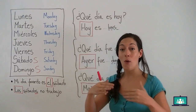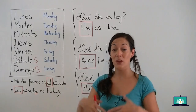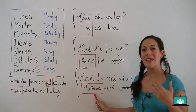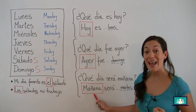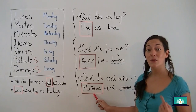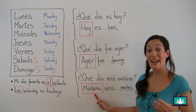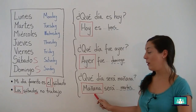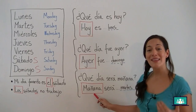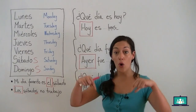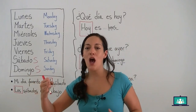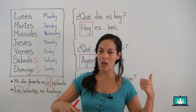If you want to ask, what day will it be tomorrow? ¿Qué día será mañana? Mañana — tomorrow. And the answer will be: mañana será, and the day. For example, mañana será martes. Tomorrow will be Tuesday. Mañana será martes. Hoy — today. Ayer — yesterday. Mañana — tomorrow. Hoy, ayer, mañana. Muy bien.